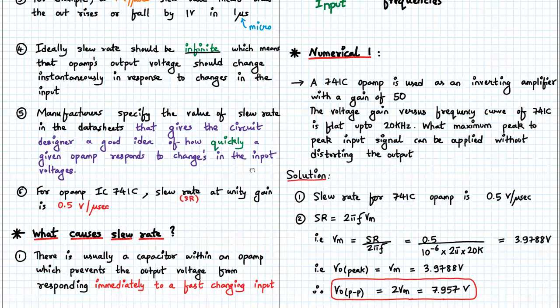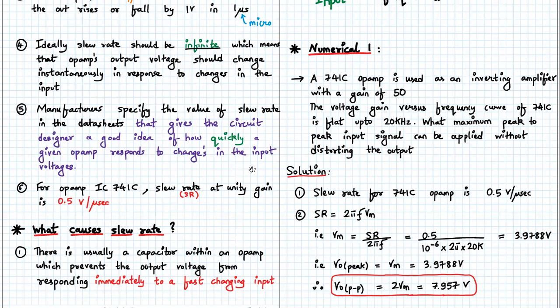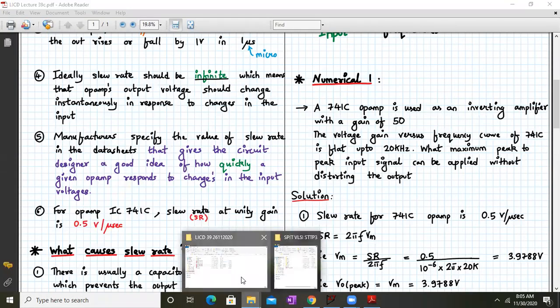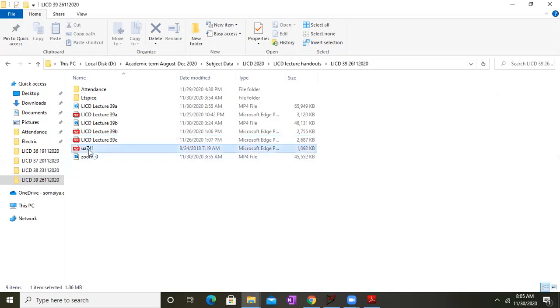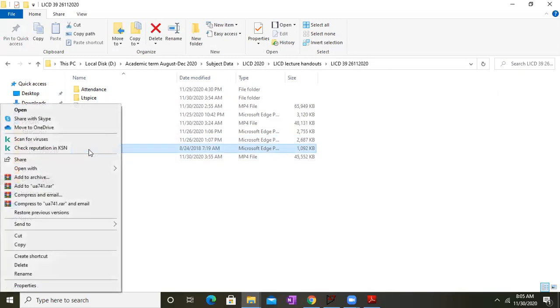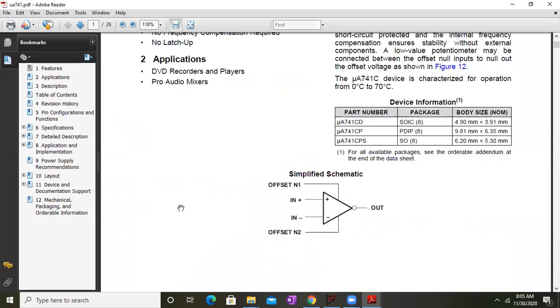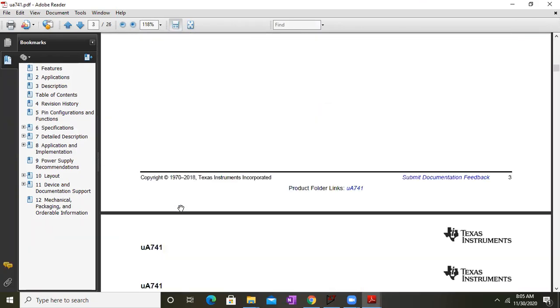Now for IC741 the slew rate at the unity gain is 0.5 volts per microsecond. Now let's check this value. Okay, so I'll go over here and open the data sheet of 741 and let's cross check that value. Okay, so this is my data sheet.